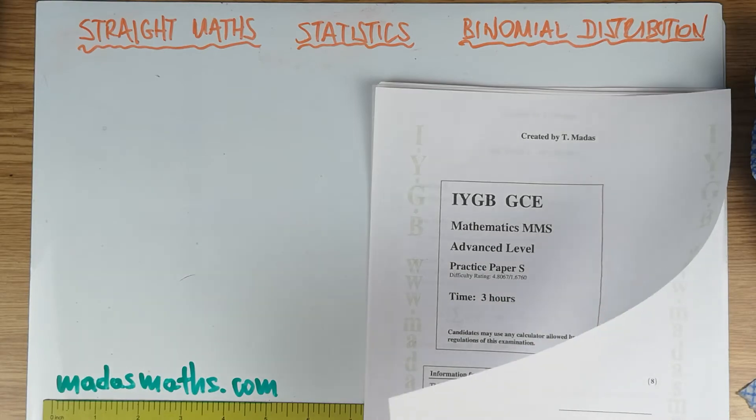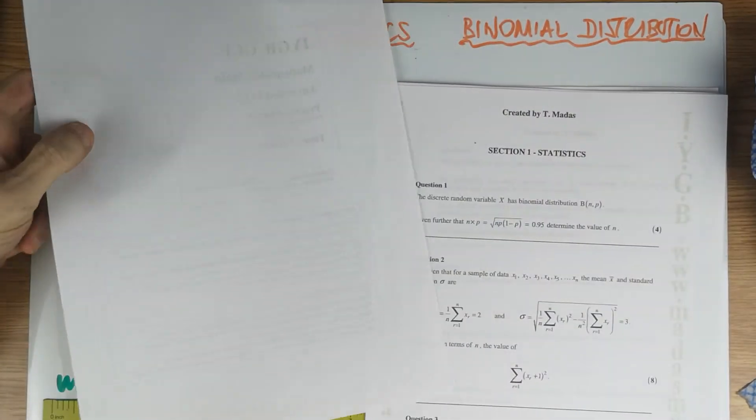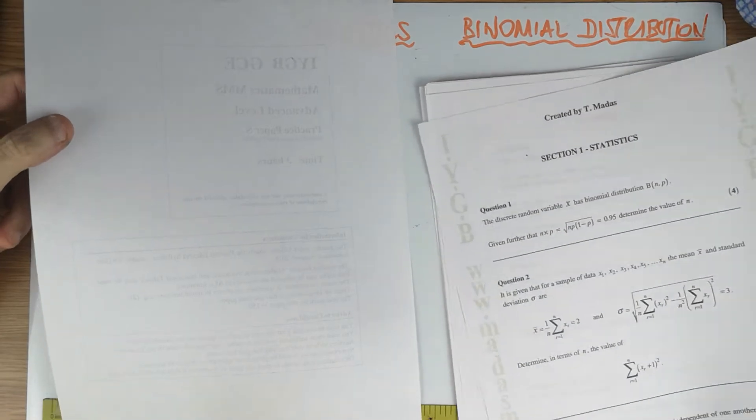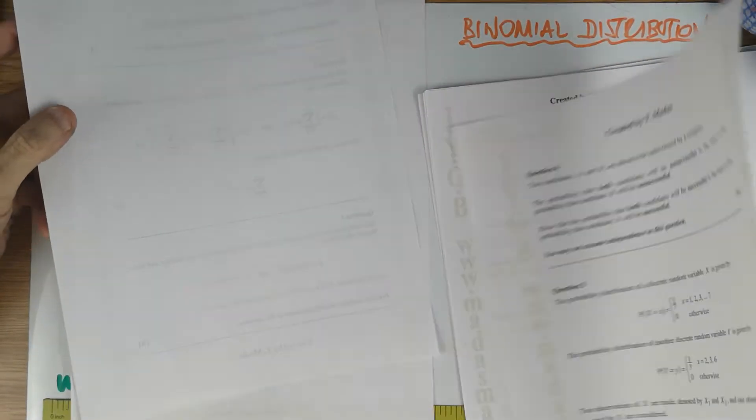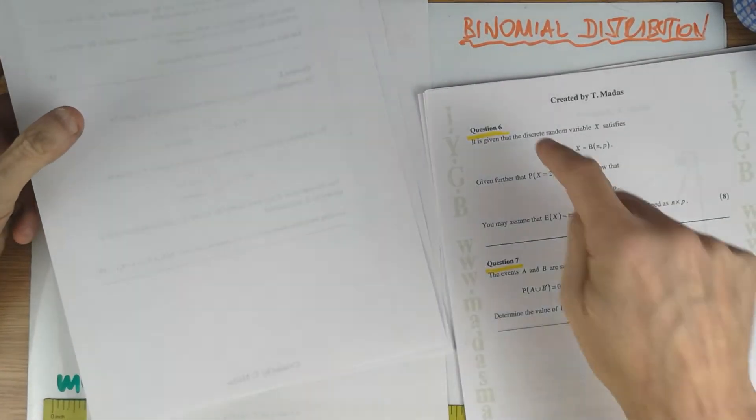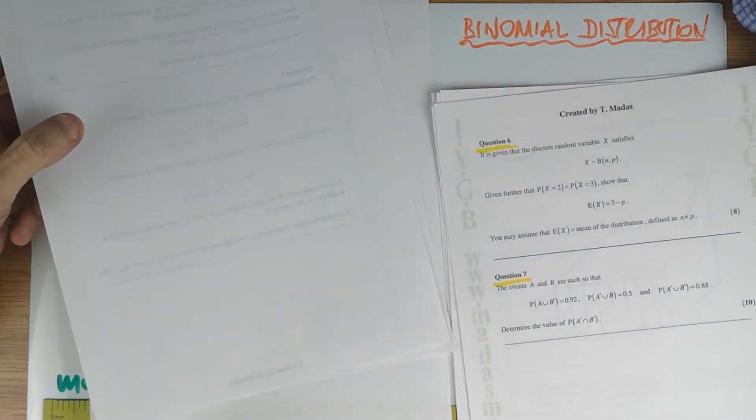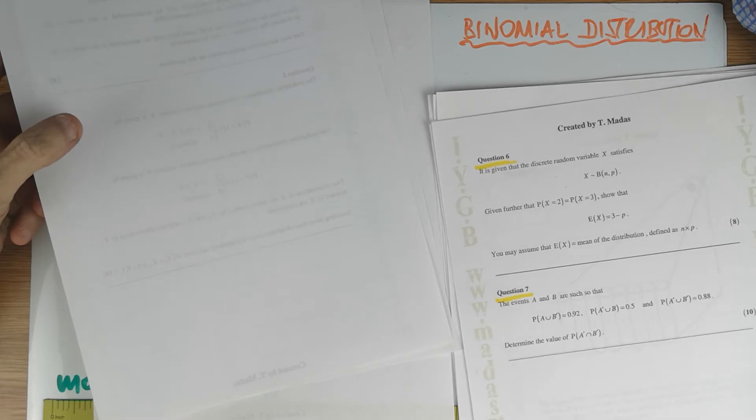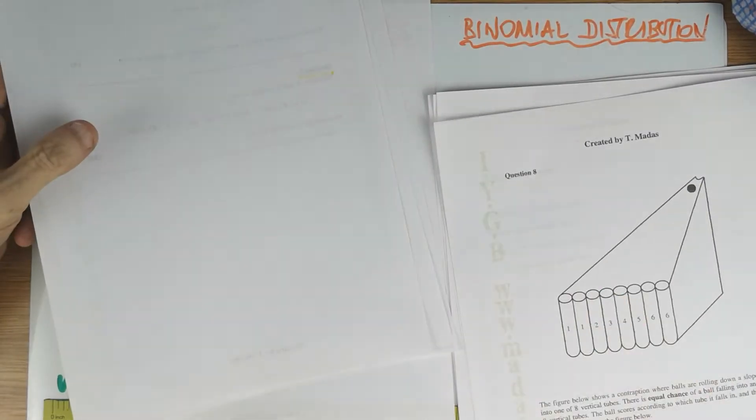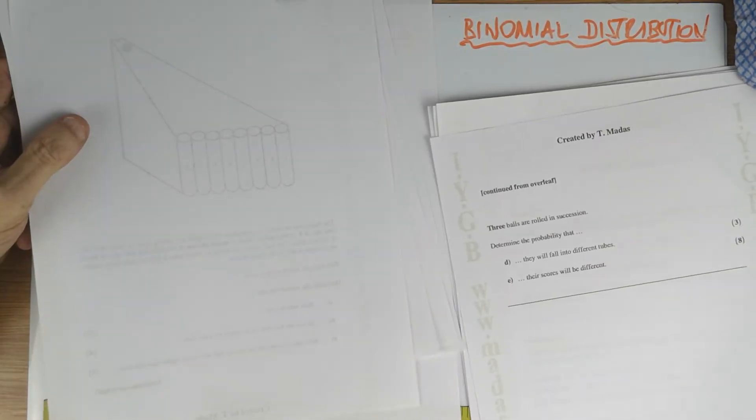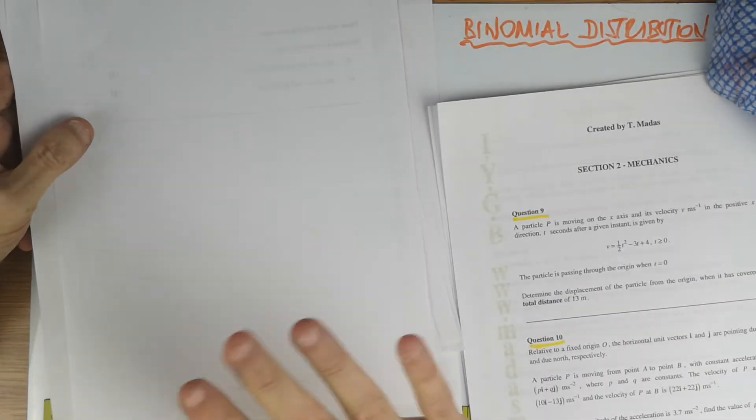I just decided to do a few questions from each paper. These are very hard papers and I highlighted here some questions from paper S that I'm going to go through. That's question six on binomial, a probability with Venn diagrams to show some techniques. This is quite a disgusting question over two pages, real beauty but very complicated and very long.